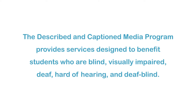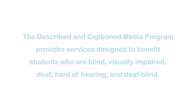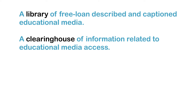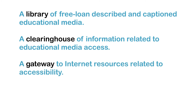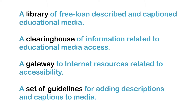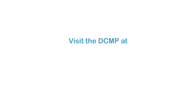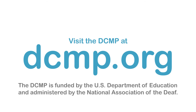The Described in Caption Media Program provides services designed to benefit students who are blind, visually impaired, deaf, hard of hearing, and deafblind. These services include a library of free loaned, described, and captioned educational media, a clearinghouse of information related to educational media access, a gateway to Internet resources related to accessibility, and a set of guidelines for adding descriptions and captions to media. There are no user registration or service fees. Visit the DCMP at DCMP.org. The DCMP is funded by the U.S. Department of Education and administered by the National Association of the Deaf.